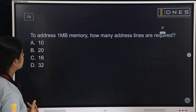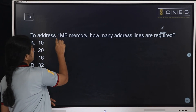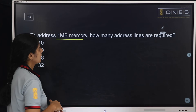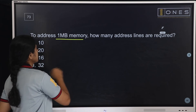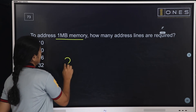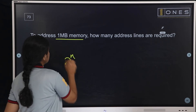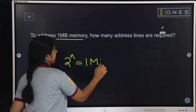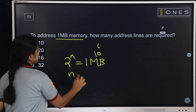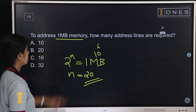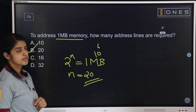Next question: To address 1MB of memory, how many address lines are required? This is a microprocessor/digital question. We use 2 raised to n equals the number of addresses. Here, 2 raised to n equals 1MB, which is 10 raised to 6 — so n equals 20 address lines. Option B is the correct answer: 20 address lines.